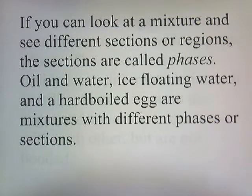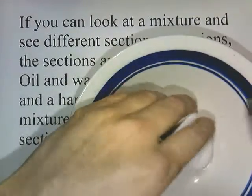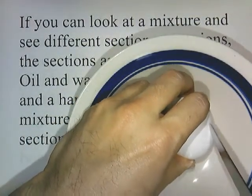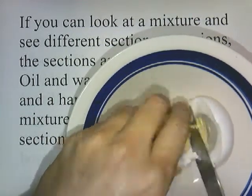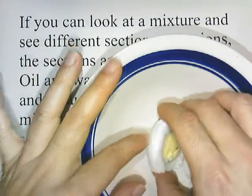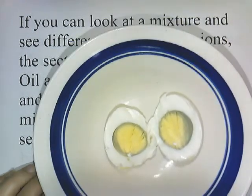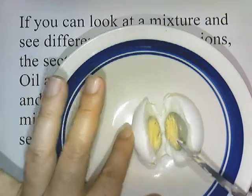If you can look at a mixture and see different sections or regions, those sections are called phases. Oil and water, ice floating in water, and a hard-boiled egg are all mixtures with different phases. An egg is a mixture — there's the shell in contact with the egg white, which is in contact with the egg yolk. Each of these different sections is a phase: the yolk phase, the egg white phase, and the shell phase.